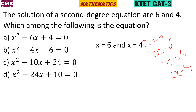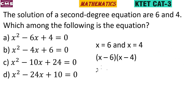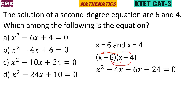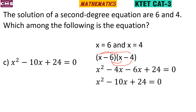We multiply (x - 6)(x - 4): x² - 4x - 6x + 24, giving x² - 10x + 24. The answer is option C.